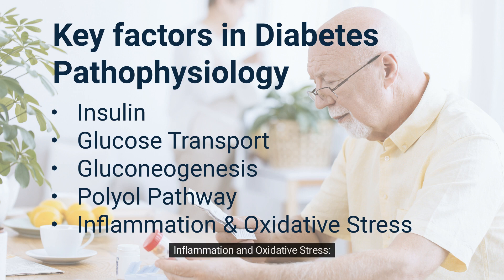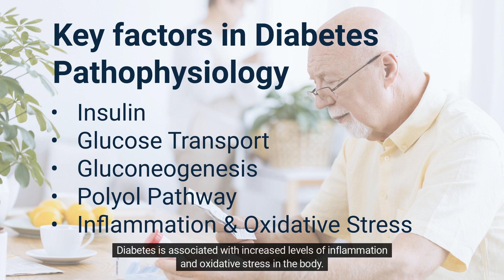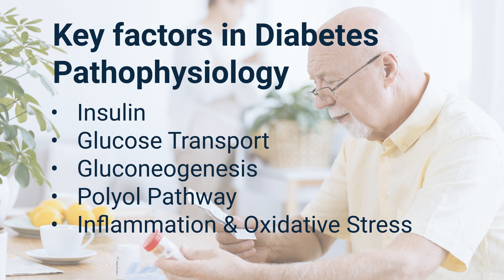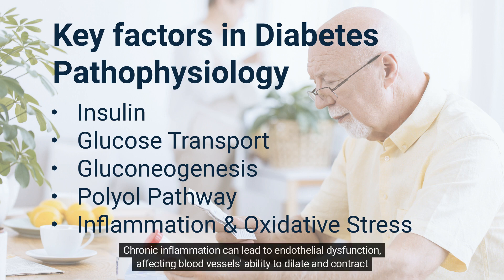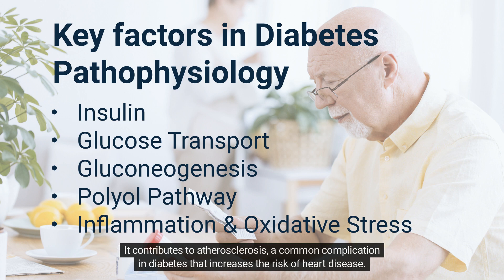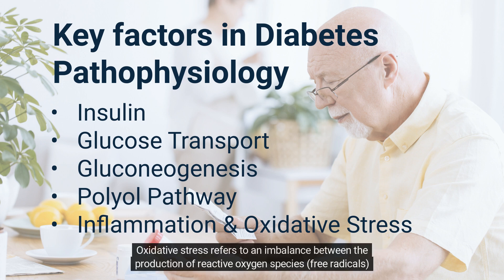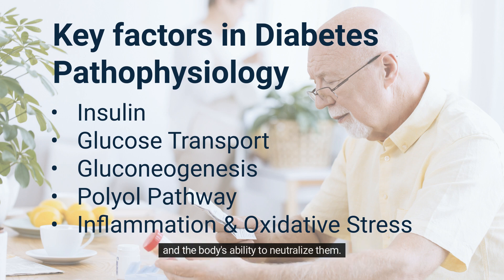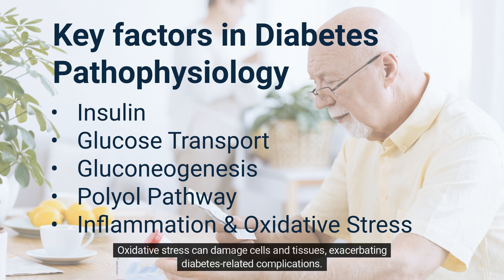Key factor 5 — Inflammation and Oxidative Stress: Diabetes is associated with increased levels of inflammation and oxidative stress in the body. Chronic inflammation can lead to endothelial dysfunction, affecting blood vessels' ability to dilate and contract properly. It contributes to atherosclerosis, a common complication in diabetes that increases the risk of heart disease. Oxidative stress refers to an imbalance between the production of reactive oxygen species, free radicals, and the body's ability to neutralize them. Oxidative stress can damage cells and tissues, exacerbating diabetes-related complications.